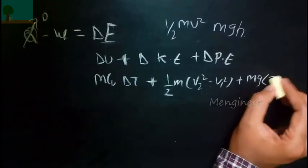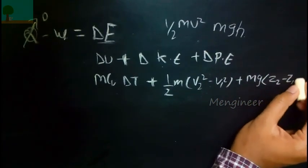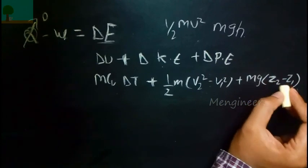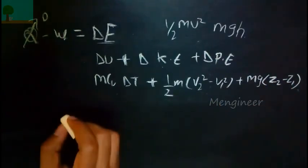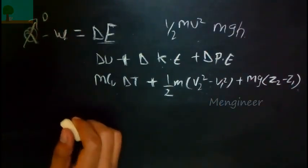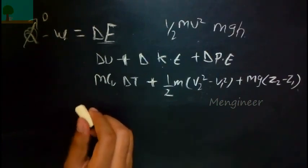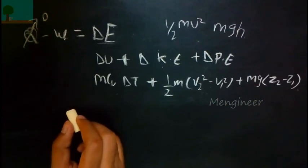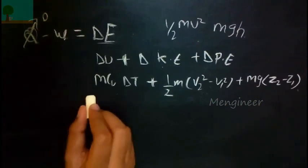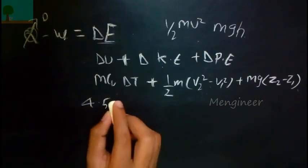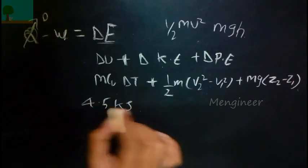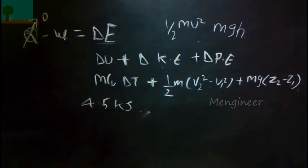The first thing is to be very conscious while reading the question, then write the given data, and after understanding the problem clearly, apply the formula to get the answer. After solving, you will get 4.5 kilojoules. That's the end of this video — thank you for watching.